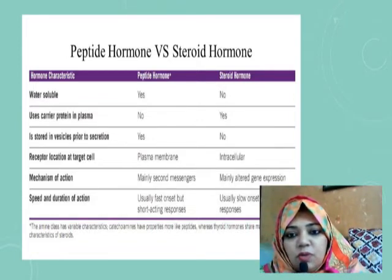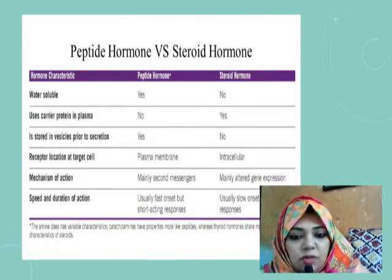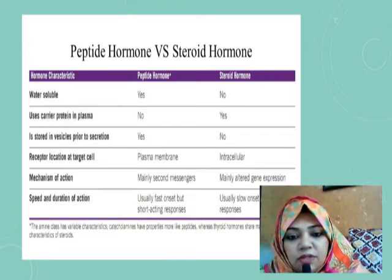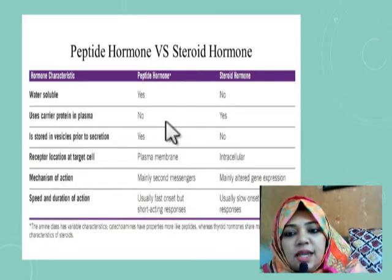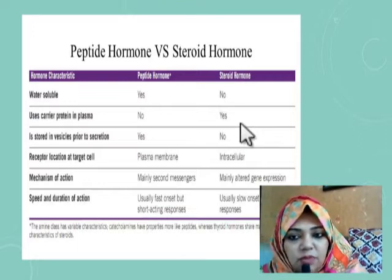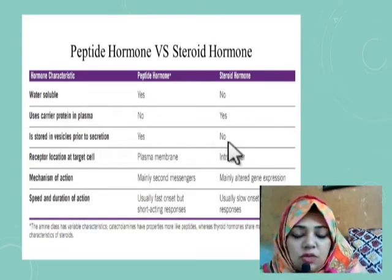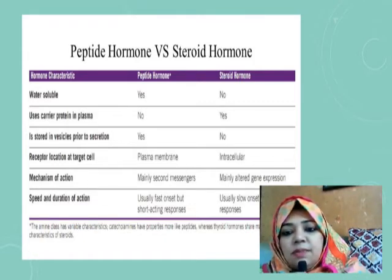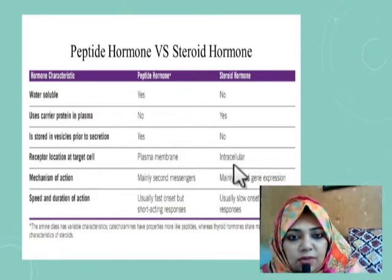Differences between peptide/protein hormones and steroid hormones: Protein hormones are water soluble; steroid hormones are lipid soluble. Protein hormones don't need carrier proteins in plasma; steroid hormones are carried by plasma proteins. Protein hormones are stored in vesicles before secretion; steroid hormones are not stored in vesicles.